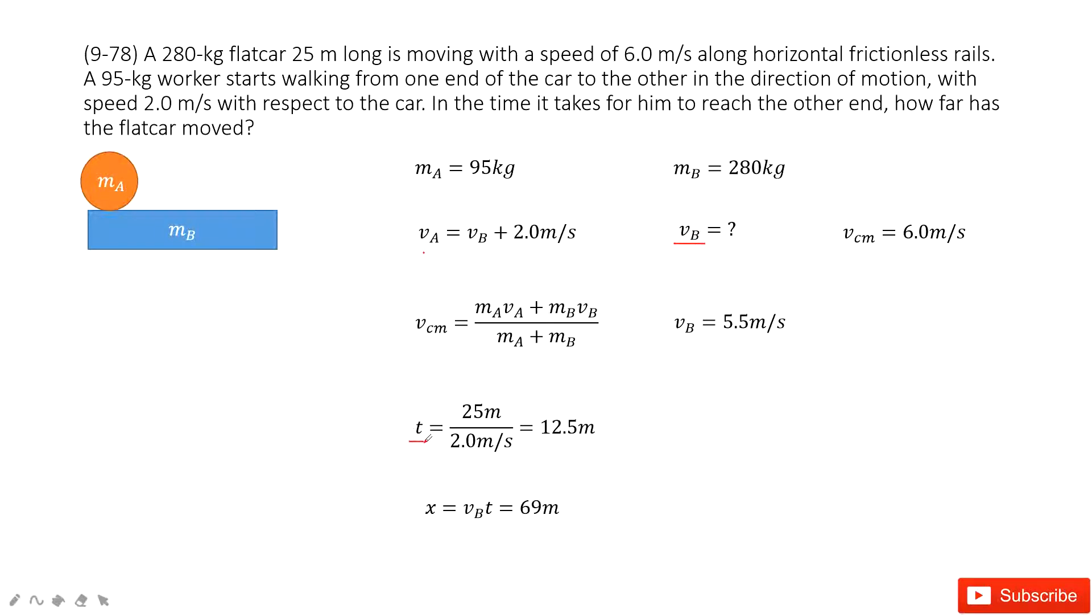Now we can see how we can find vb. We use the center of mass velocity equations. In these equations, you can see all the quantities are given except vb. So you input the known quantities inside, and you can get vb very easily.